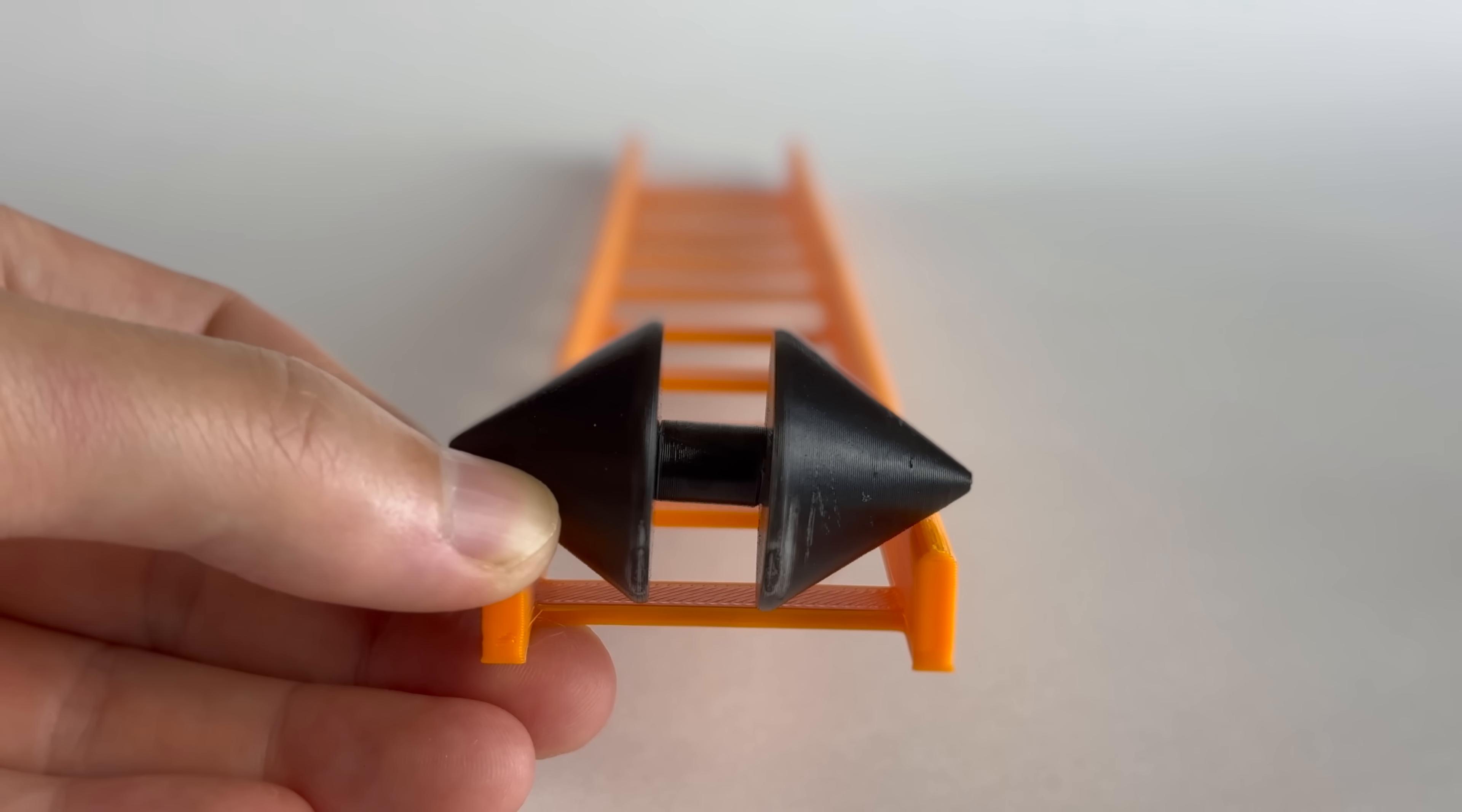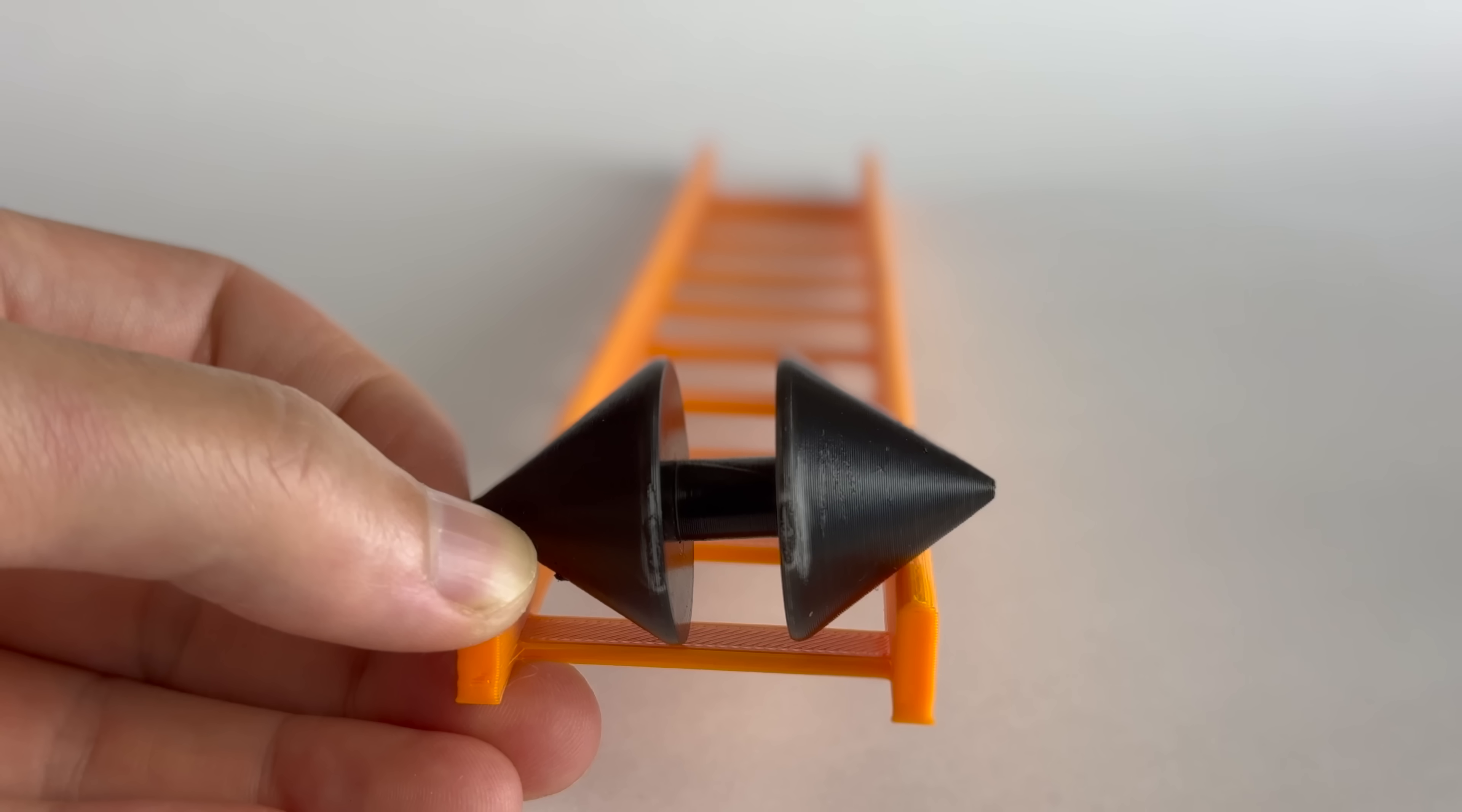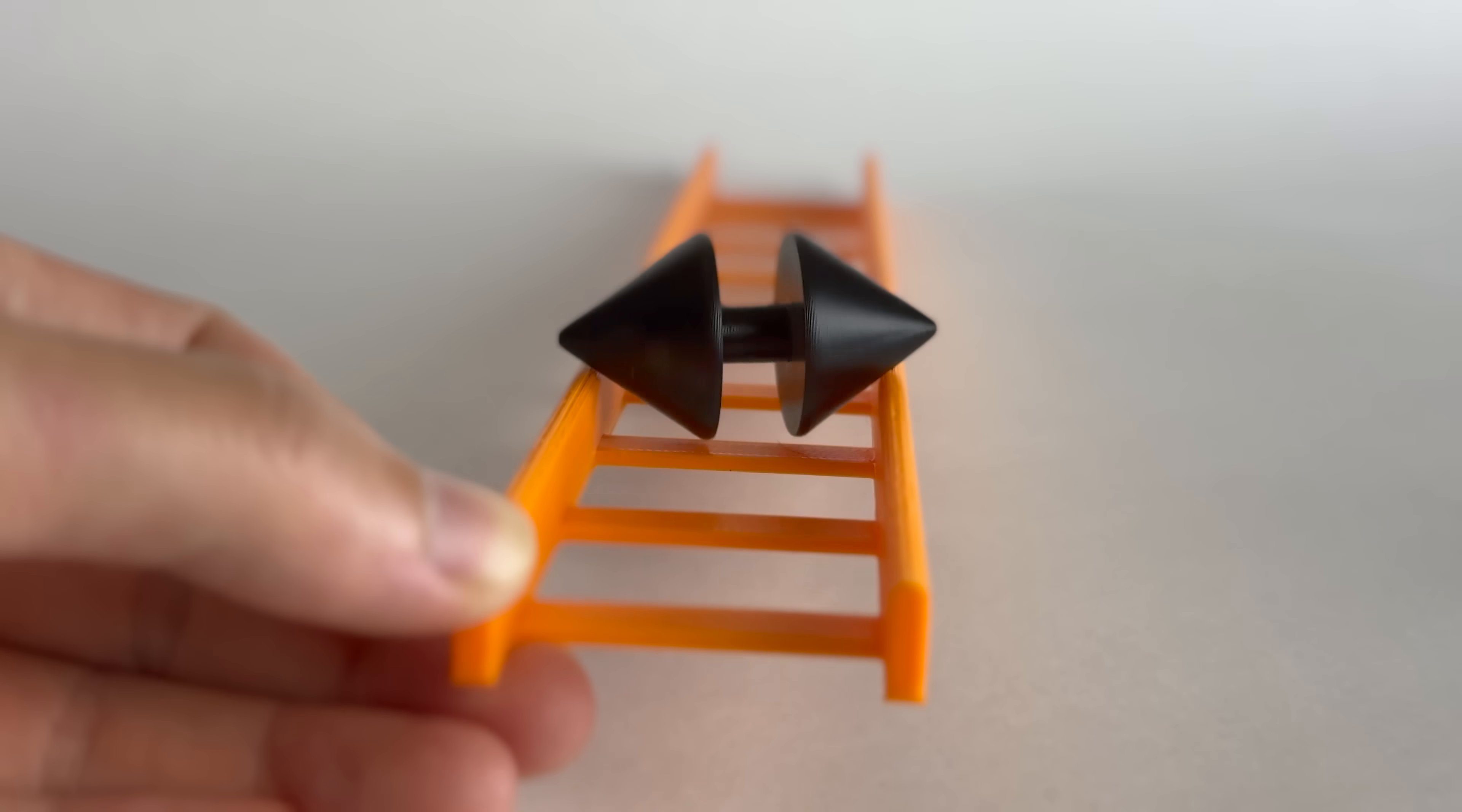But what happens if we have a straight track? The wheels basically self-align. It's practically impossible for it to derail.